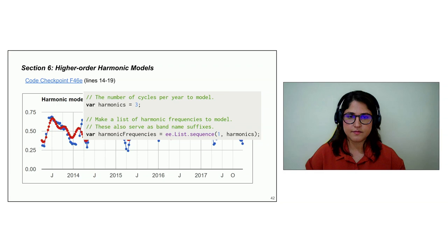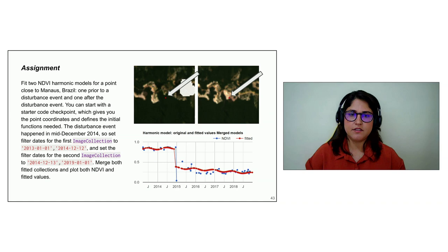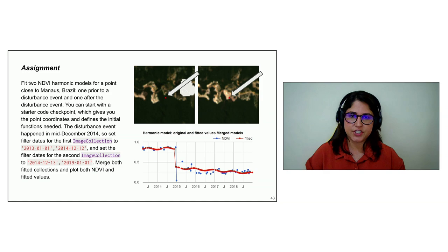At the end of the chapter, there's an assignment: plot two harmonic models for a location in Manaus — one prior to a disturbance event and one after. A code checkpoint is provided as a starting point. The goal is to show that there can be breaks in a time series or trend. This is an introduction to following chapters on change detection, including the CCDC algorithm and the CODED algorithm in the applications section.